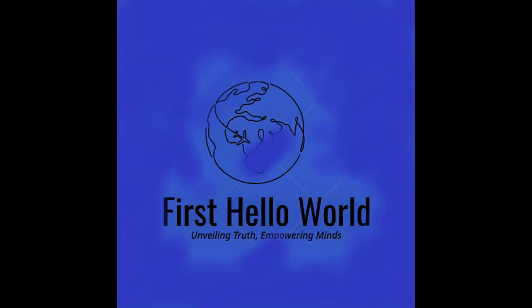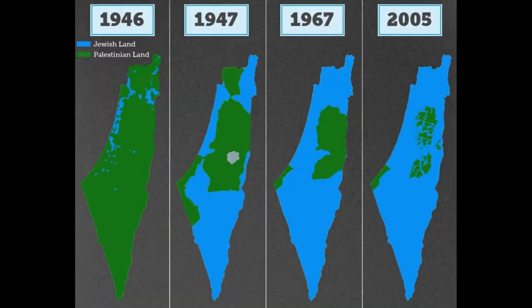In 1947, the United Nations voted to partition Palestine into two states — one Jewish and one Arab. The Palestinian people rejected the partition plan, and the day after the UN vote, civil war broke out in Palestine.